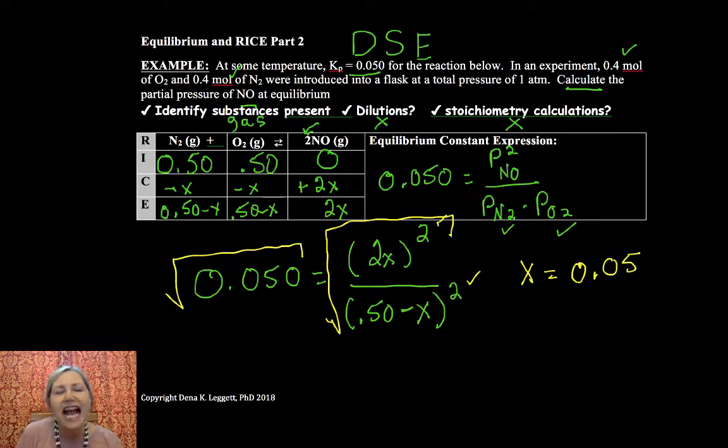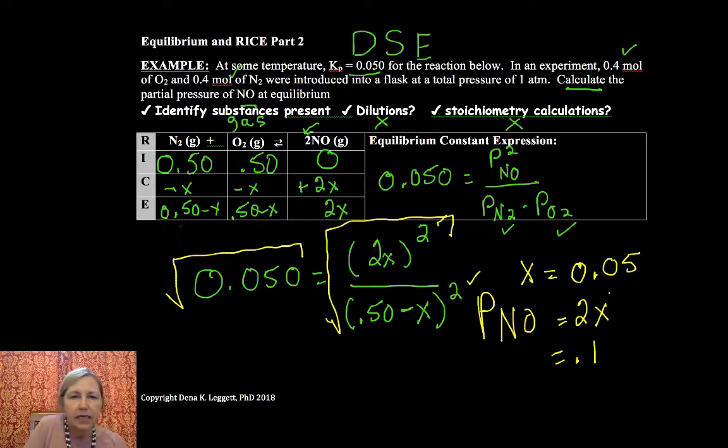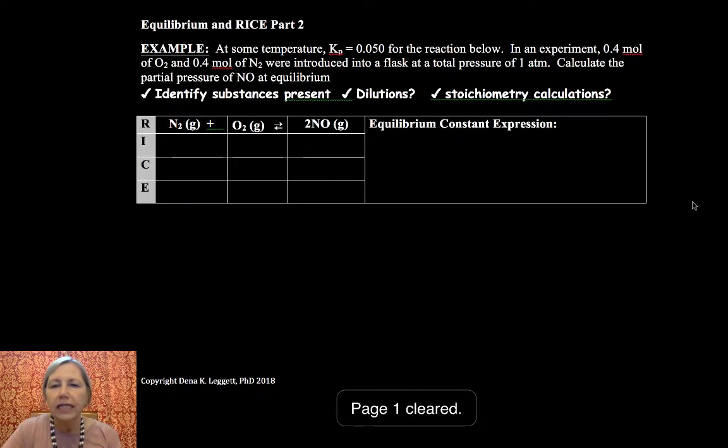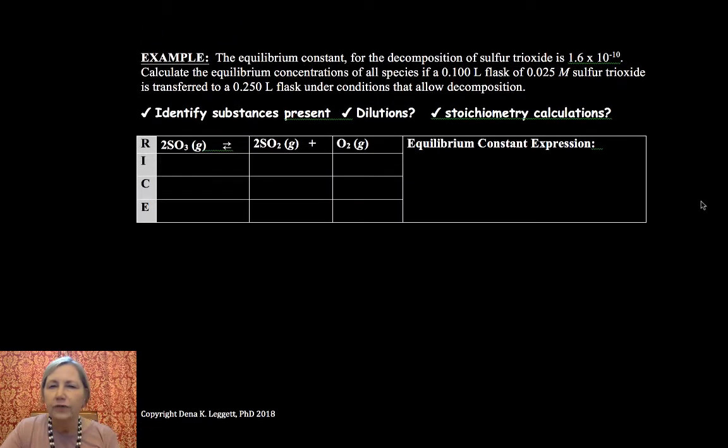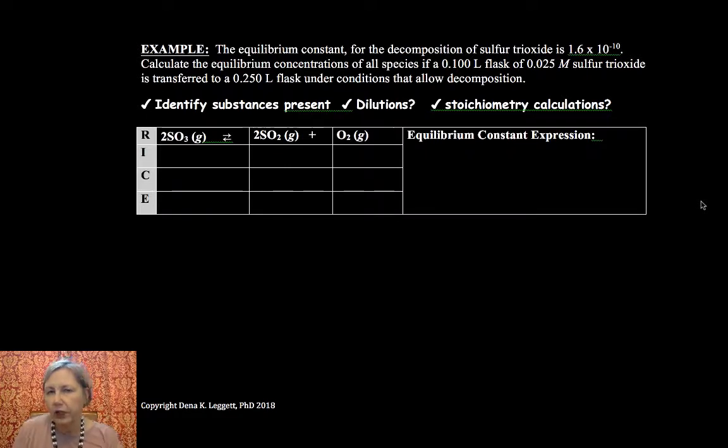And I want you to go ahead and solve for that, and hopefully you get, and I say hopefully because this is what I got and I'm hoping I'm right, I have 0.05 for X. So now it asks me to calculate the partial pressure of NO at equilibrium. Well NO, the partial pressure of NO is 2 times X, so it is equal to 0.1. So this would end up being 0.45, this would be 0.45, and this is 0.1.